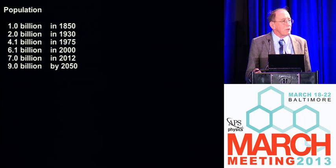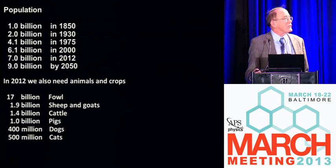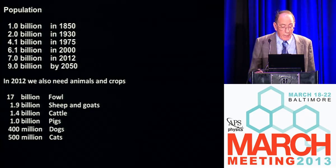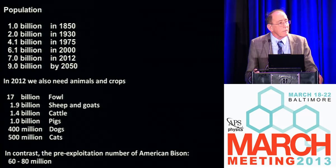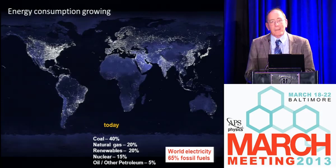These are huge impacts, and we often don't look at what it requires to feed those people. If you look back at the natural system in the U.S. in the pre-exploitation time, there were only 60 to 80 million bison in the Great Plains. And if you look at energy, we can certainly see that consumption if you look from space at the Earth today.